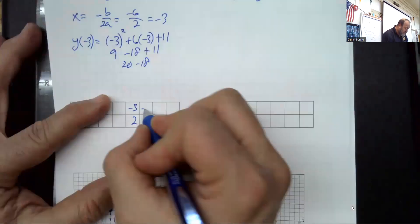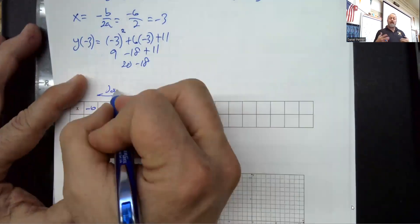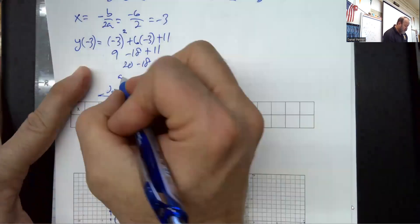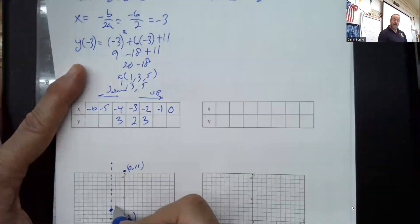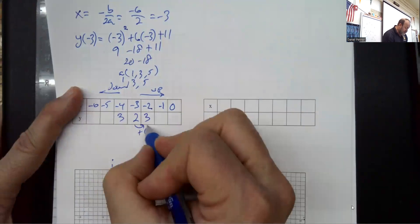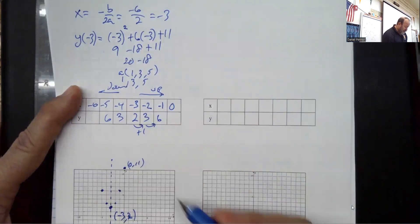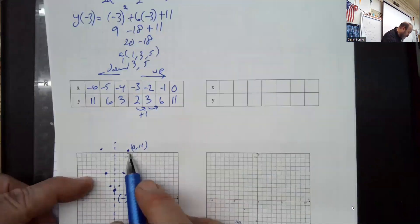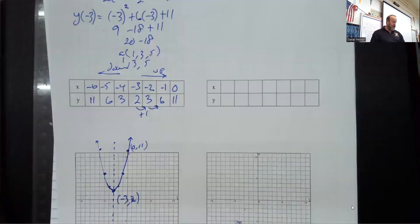As we move right or left from the vertex, we use a pattern. For a quadratic, we go up by whatever 'a' is multiplied by 1, 3, 5. Since a is 1, we go up 1, then up 3, then up 5. So going up 1 from the vertex, then up 3 — that's the value 6 — and up 5 more hits 11, which confirms we reach the y-intercept. Then connect the dots with a nice U shape, not a V.